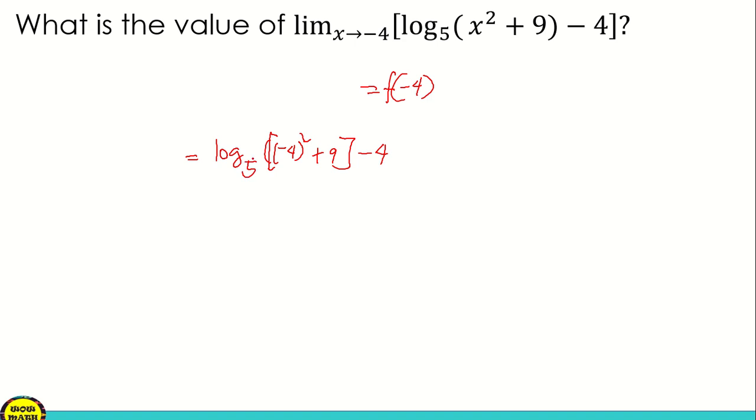With base 5. And then log of, so negative 4 squared is 16 plus 9 minus 4 with base 5. Then logarithm of 16 plus 9 is 25 minus 4 with base 5.